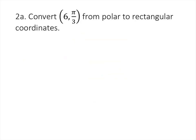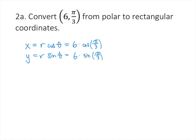Converting from polar to rectangular is much easier, because we don't have to worry about which quadrant the point is in — we can always use x equals r cosine theta and y equals r sine theta. For the point (6, π/3): x is 6 times cosine of pi over 3, which is 6 times 1/2, giving 3. y is 6 times sine of pi over 3, which is 6 times √3/2, giving 3√3. So the rectangular coordinates are (3, 3√3).